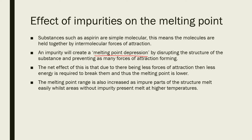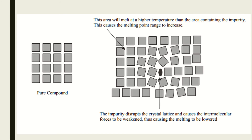A nice easy way of visualising this is this picture here. For a pure compound — the square just represents the aspirin — we've got all the intermolecular forces between those various molecules. If we've got an impurity within there, as we can see, it disrupts how well it's packed together, whereas you've still got areas of fairly pure regions existing. This region will melt at a lower temperature — there are fewer intermolecular forces to break there.